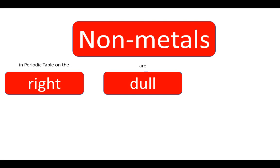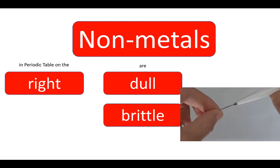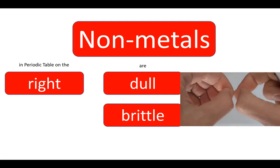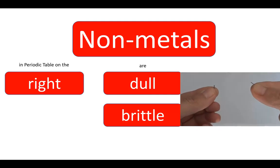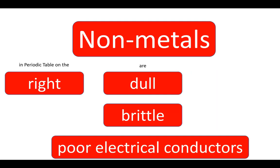Non-metals tend to be dull rather than shiny, and brittle rather than flexible. That means that if you try to bend them, they will break or shatter. They also tend to be poor conductors of electricity, to be insulators often.